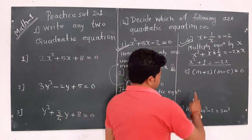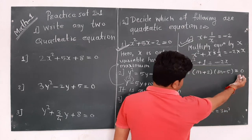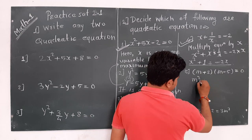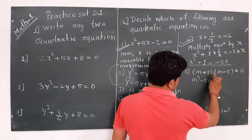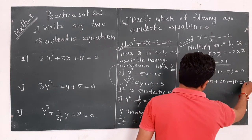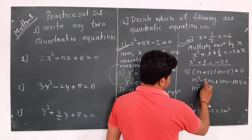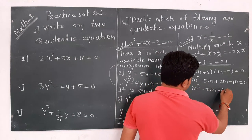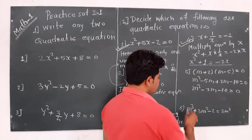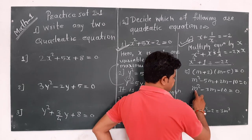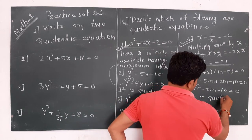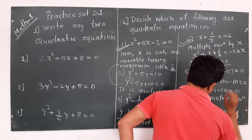Next: if we expand and solve the equation, we get m·m = m², m·(-5) = -5m, 2·m = +2m, and 2·(-5) = -10, all equal to 0. Then m² - 3m - 10 = 0. Here, m is the only one variable having maximum index 2. Therefore, it is a quadratic equation.